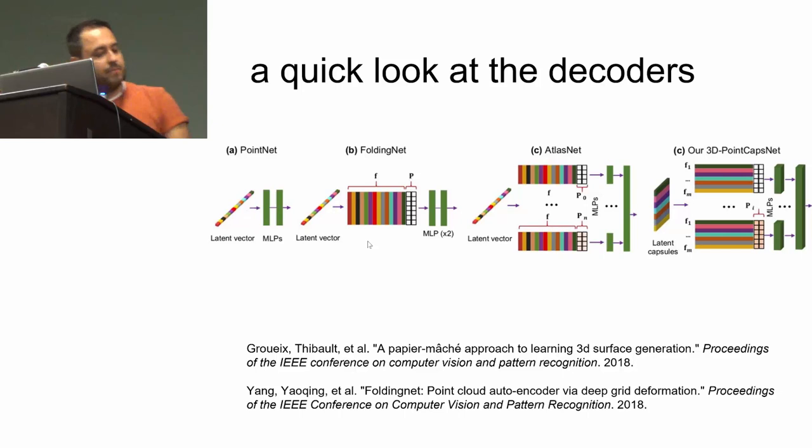Now we look at different decoders. What happens is in all of them, this is fixed to a 2D plane. This is sampled points on some 2D space, and then we have this global code. This grid combines with the global feature vector to deform on top of the object that I want to reconstruct.